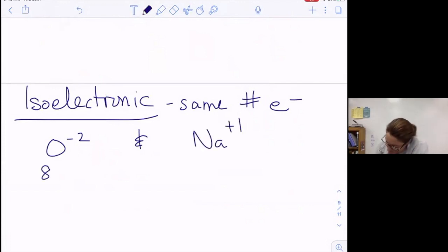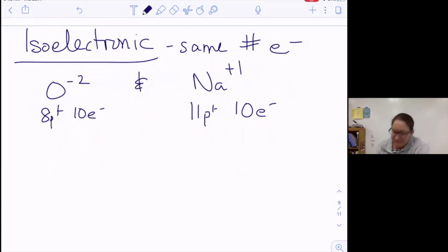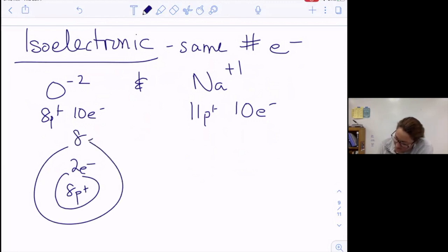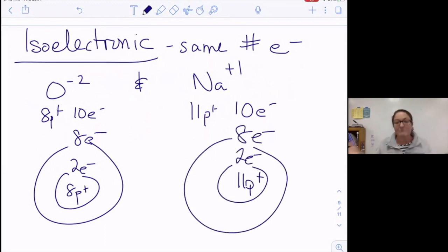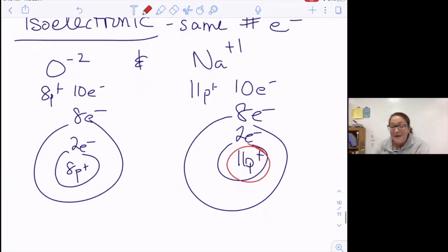Oxygen minus two has eight protons and ten electrons. Sodium plus one has eleven protons and ten electrons. So if I made these little sketches again, lithium has eight protons, two electrons, and then eight electrons in the second shell, whereas lithium has eleven protons, two electrons, eight electrons. So the electrons are the same - that's the isoelectronic term. What's different between these is how the protons are pulling on those electrons. This atom has eleven protons pulling on its electrons, so it's able to pull harder, making it smaller.